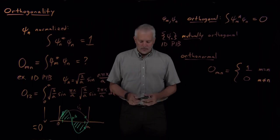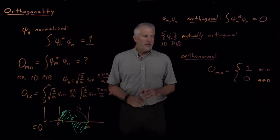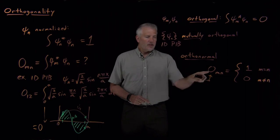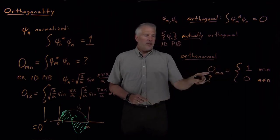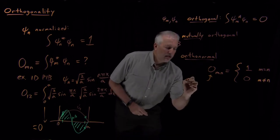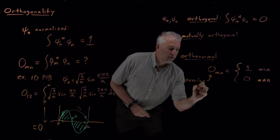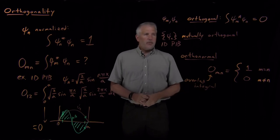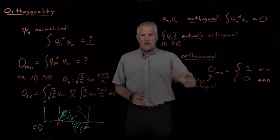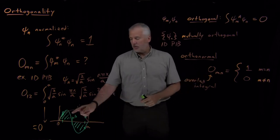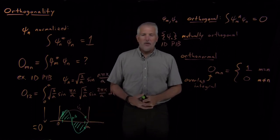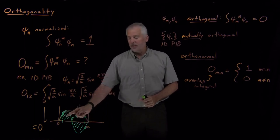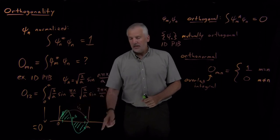Here's a quick addendum to point out one more piece of terminology: a name for the quantity O_MN that we've been discussing. This O_MN, which equals either 1 or 0 when the wave functions are orthonormal, is called an overlap integral. It's an integral because two wave functions are multiplied together and integrated.